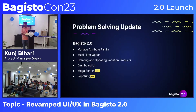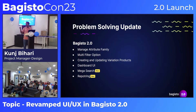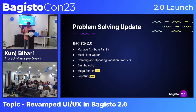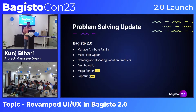That covers the UI we have developed. Now let's discuss what specific problems we solved in Bagisto 2.0: managing attributes, multi-filter options, easier variation products, a new dashboard UI, mega search, and reporting — these are all new features we have introduced.